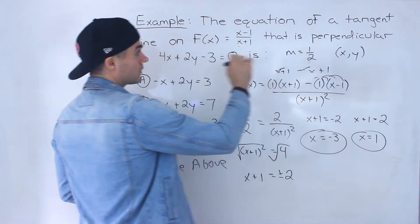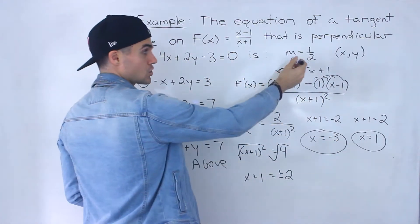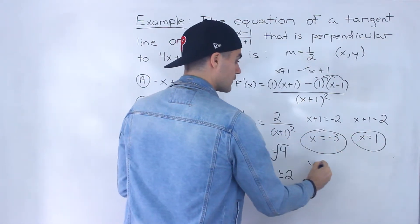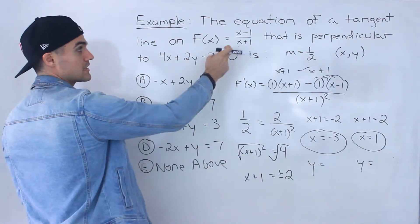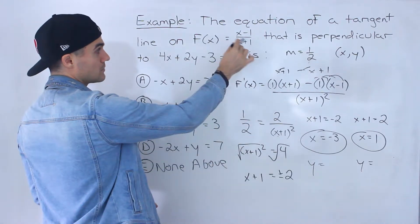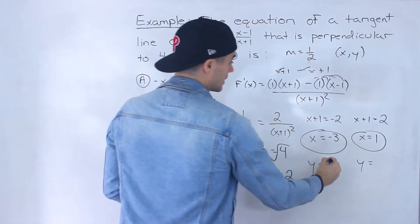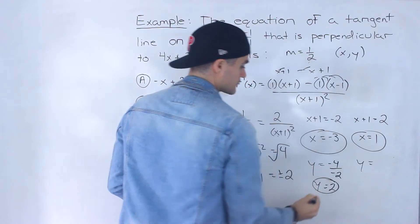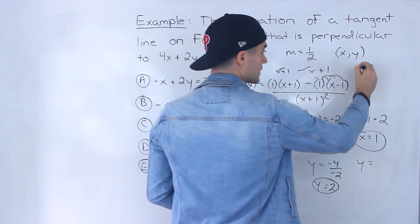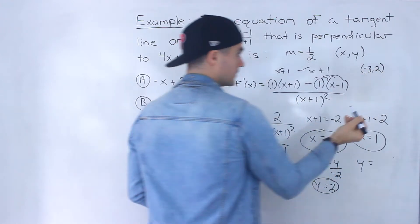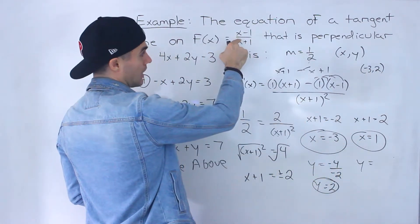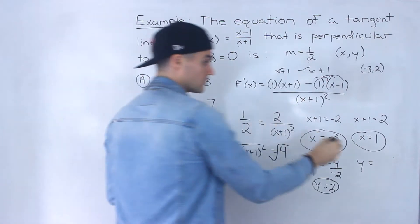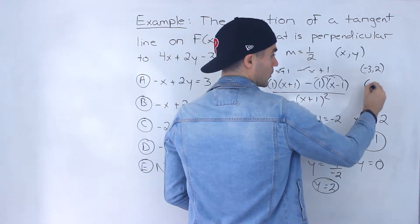We're finding the equation of a tangent line, so we need the slope and the full coordinate. We only have the x values, so we plug them into the original function. For x equals negative 3: negative 3 minus 1 is negative 4, and negative 3 plus 1 is negative 2, so f(negative 3) equals positive 2. That gives the coordinate (negative 3, 2). For x equals 1: 1 minus 1 is 0, and 1 plus 1 is 2, so f(1) equals 0. The other coordinate is (1, 0).